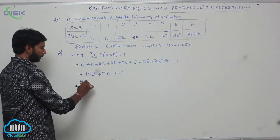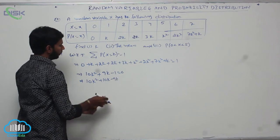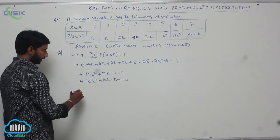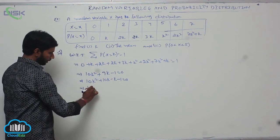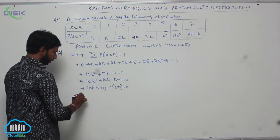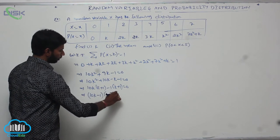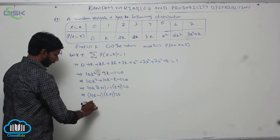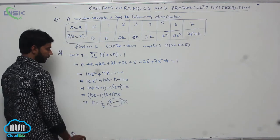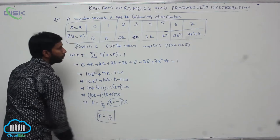Factoring: 10k squared plus 10k minus k minus 1 = 0. In the first two terms, 10k is common: 10k(k+1) minus 1(k+1) = 0, giving (10k minus 1)(k plus 1) = 0. Therefore k = 1/10 or k = minus 1. Since k = minus 1 does not give valid probabilities, k = 1/10.